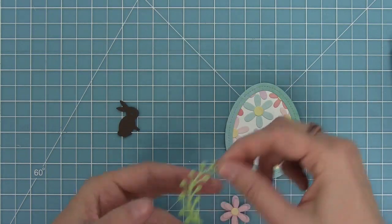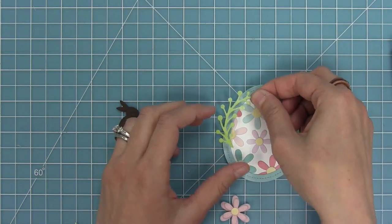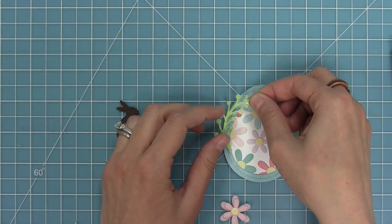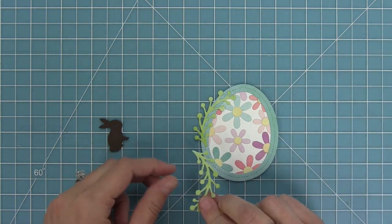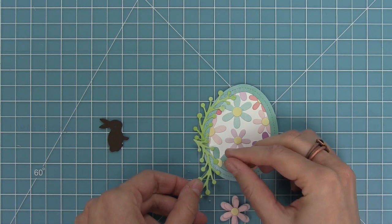Next up I'm going to add a little glue to my spring sprigs here and layer them on the edges of my egg. I'm also going to layer my little bunny with a little foam adhesive and my flower too and I just had to thank Lynette here.